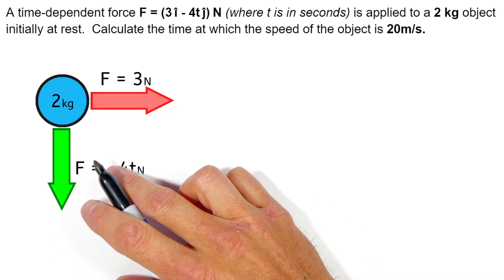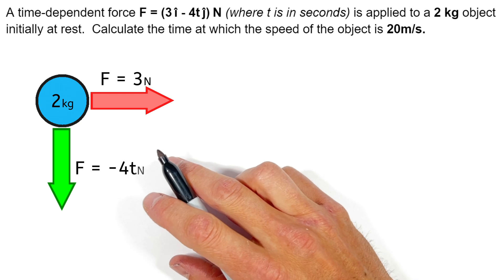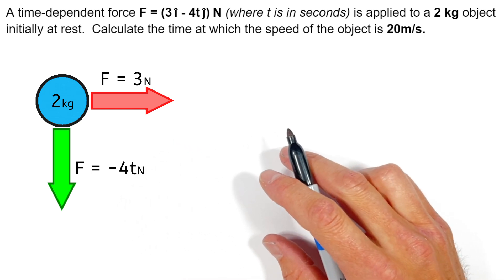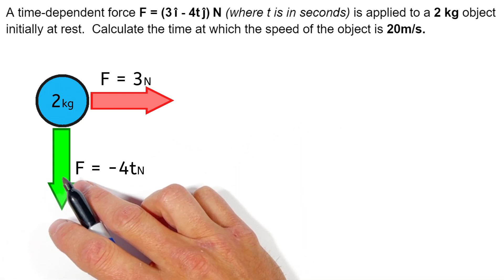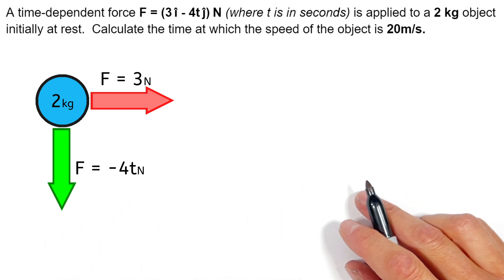Okay, today we're taking a look at a time-dependent force of F equals 3i minus 4tj, which is being applied to a 2 kilogram object that's initially at rest. And we're going to calculate the time at which the speed of the object is 20 meters per second.